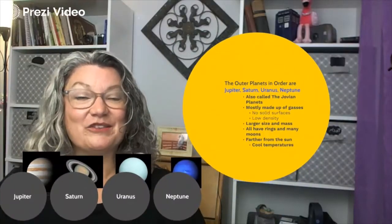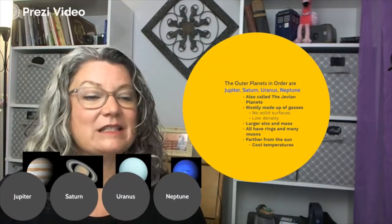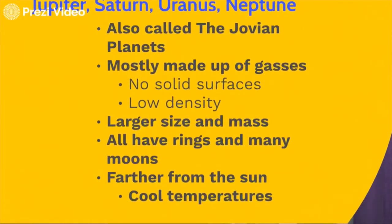Those last four planets are called the outer planets. They include Jupiter, Saturn, Uranus, and Neptune. They are also called the Jovian planets — that's a scientific name used in a lot of materials written about these planets. However, on our test we are going to refer to them as the outer planets, since they're furthest away from the sun, way out there outside the asteroid belt.